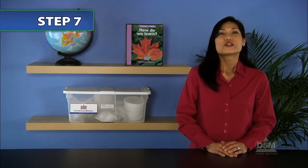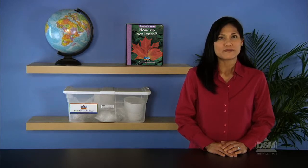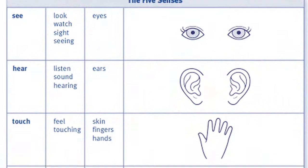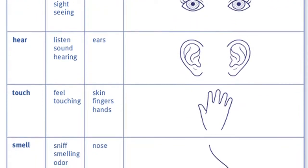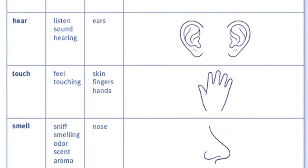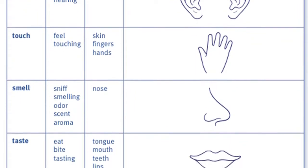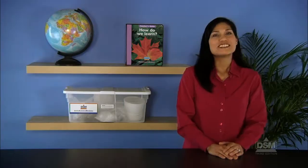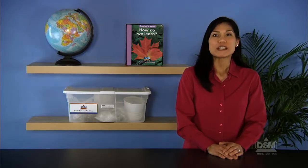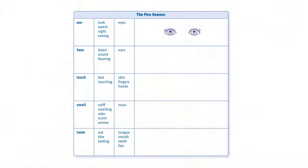Draw students' attention to the photographs on the body and senses poster and elicit from the students that the five senses use different parts of the body. We see with our eyes, we hear with our ears, we touch with our hands, fingers, or skin, we smell with our noses, and we taste with our mouths or tongues. Add these sense organs to the five senses experience chart by drawing pictures of the eyes, ears, hand, nose, and mouth, and write the names of each body part.